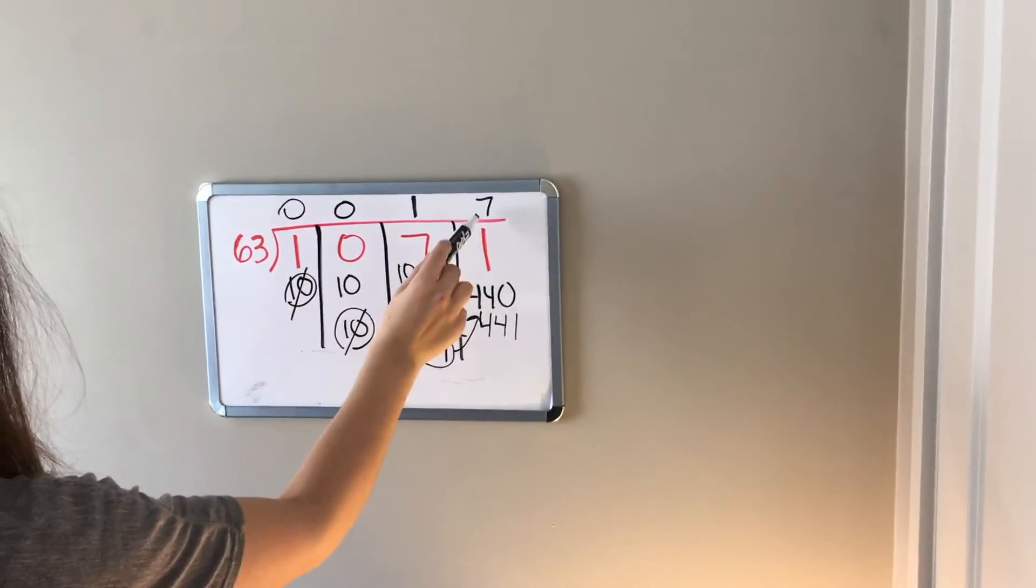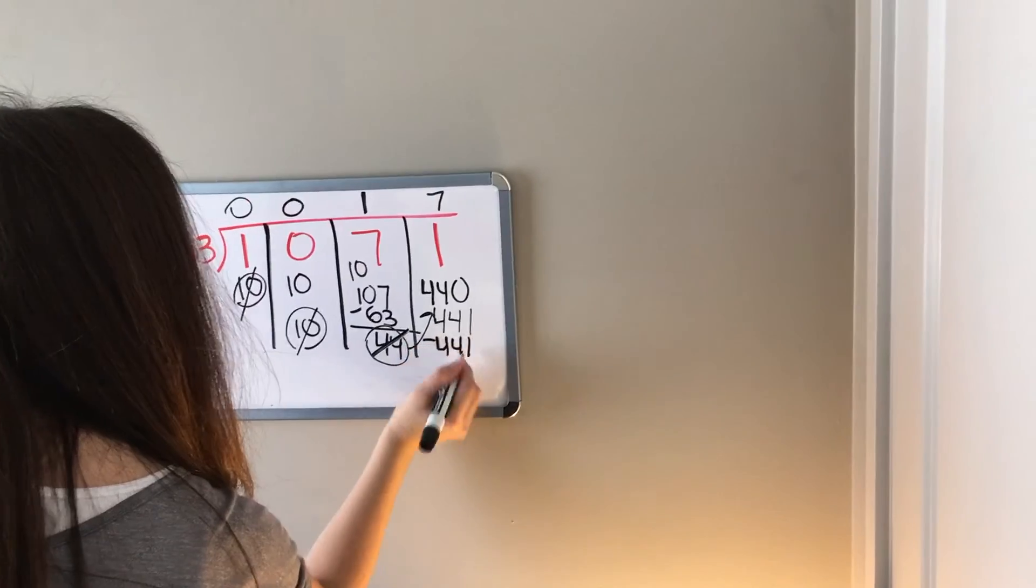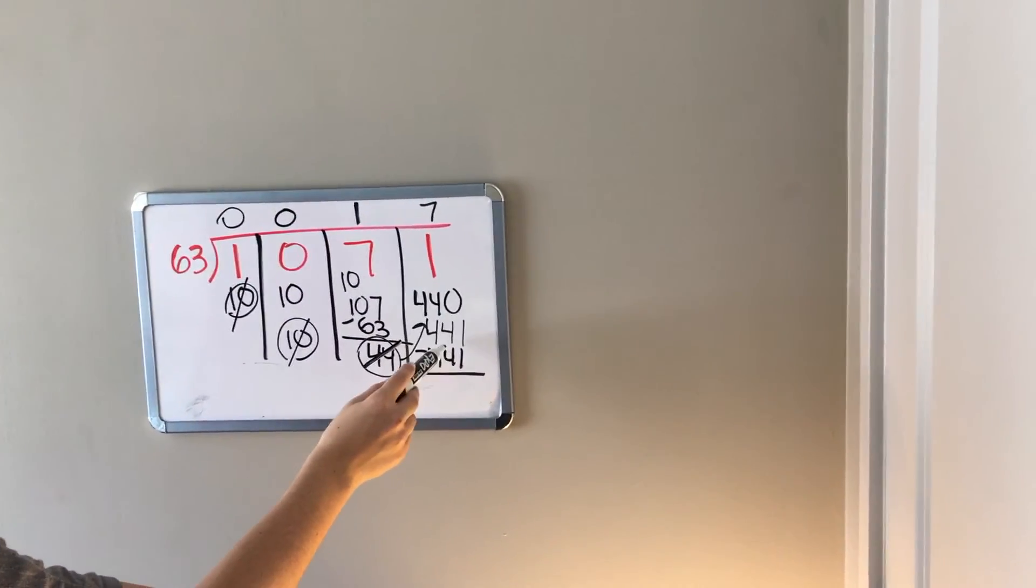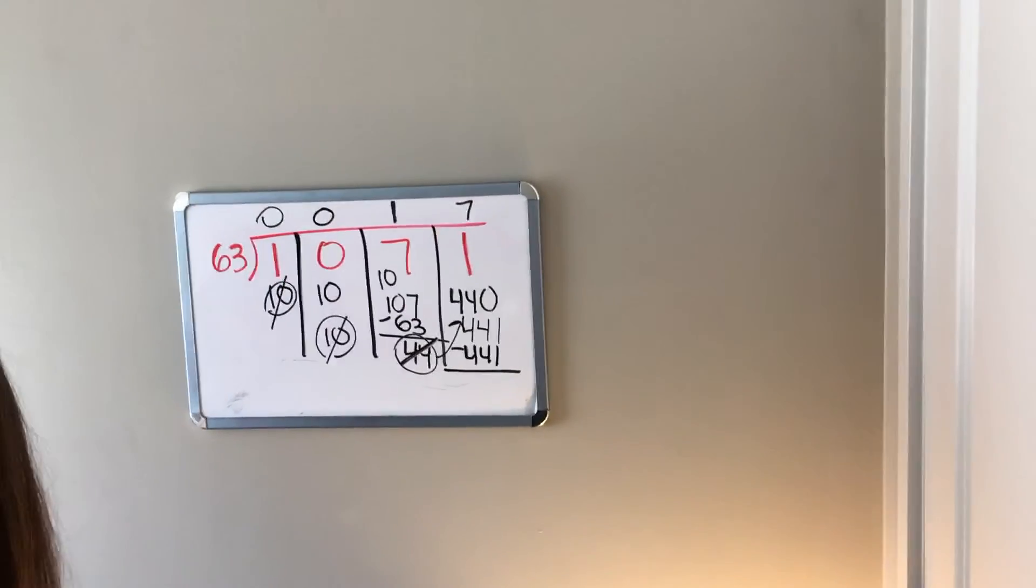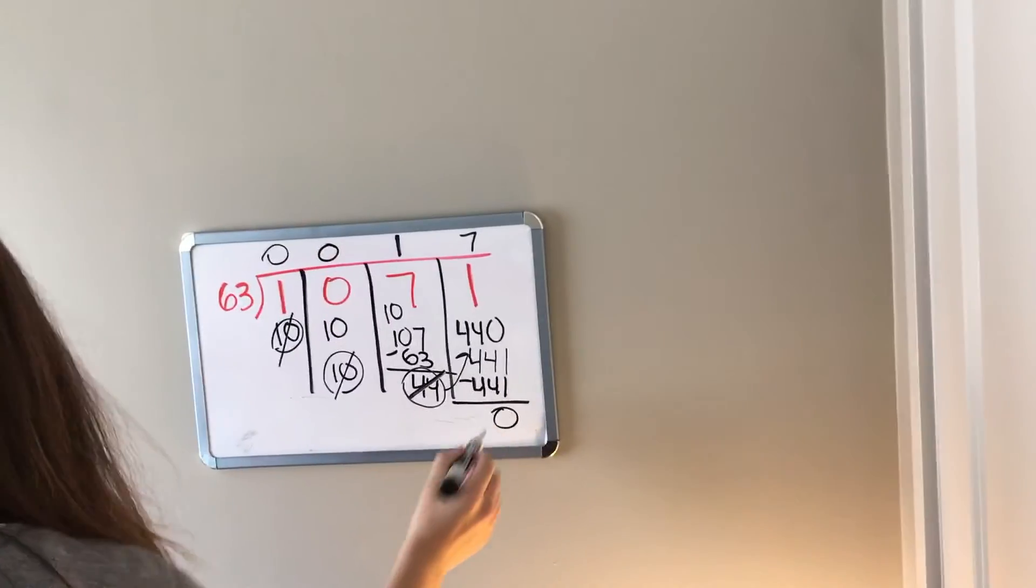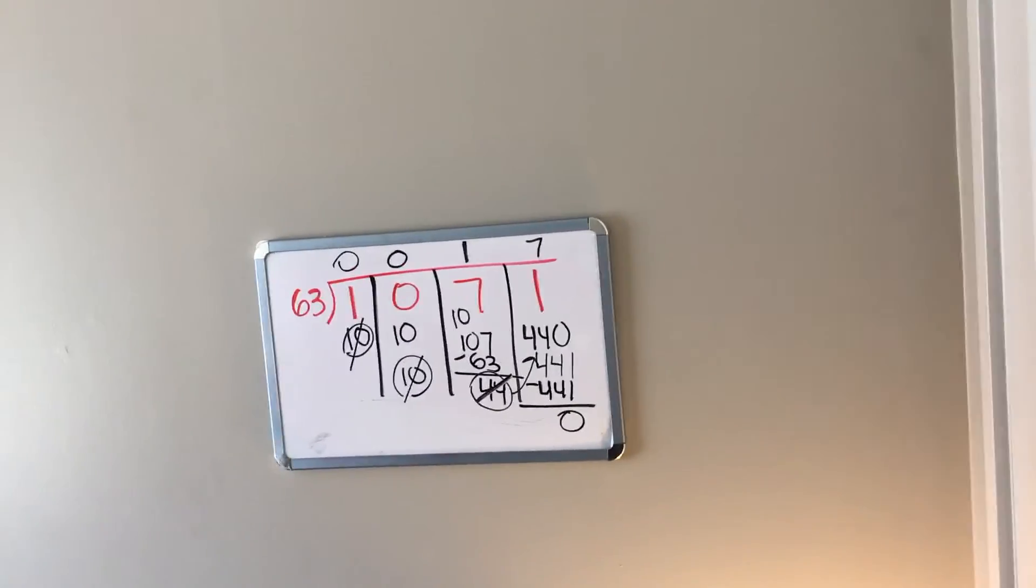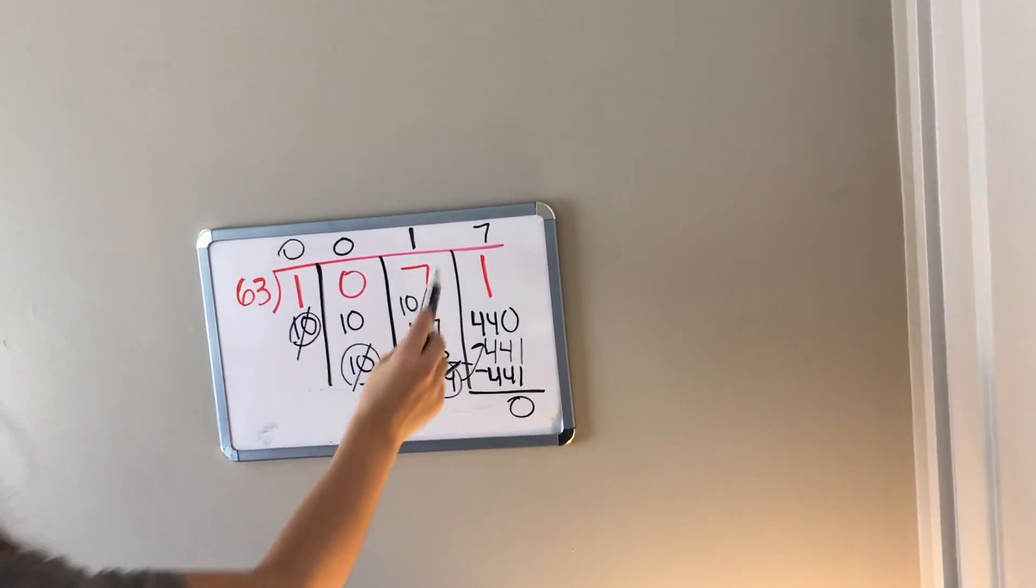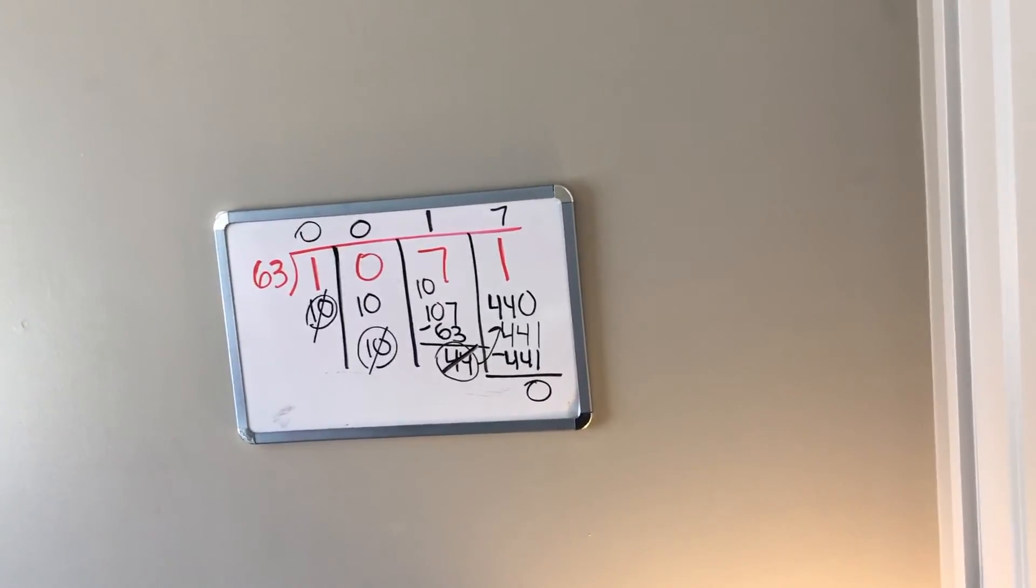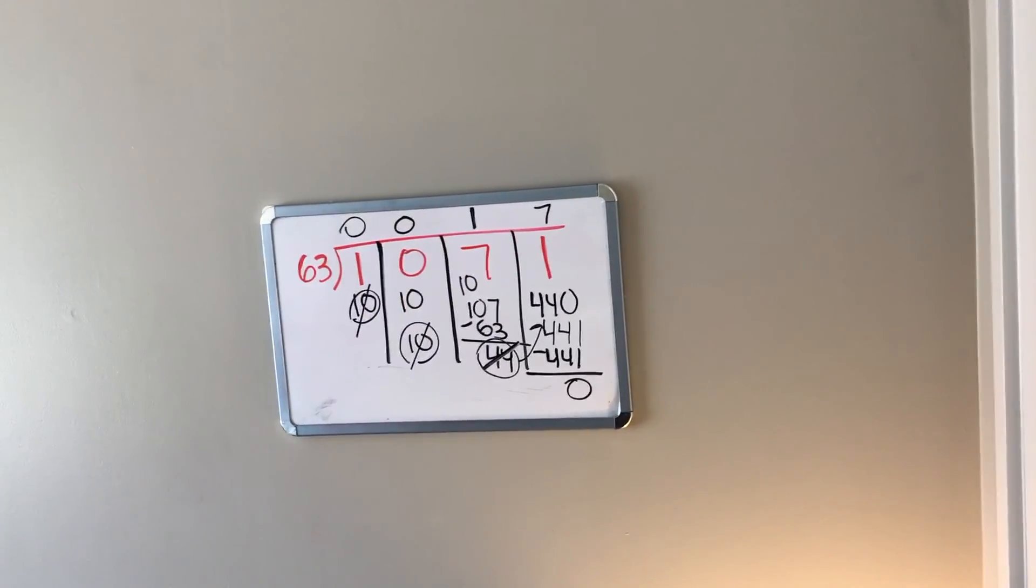So 63, 7 times, we know is 441, so we're going to subtract those because we took away 441. We used up 441 from 441, and when you do that you get zero. So this is saying that I can pass out 17 things to all 63 people and I will completely use 1071 things up.